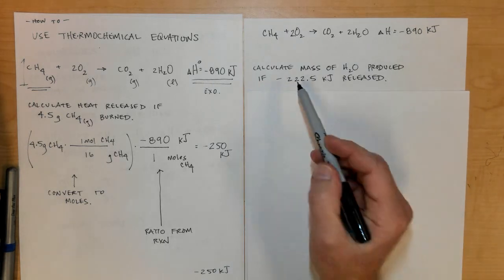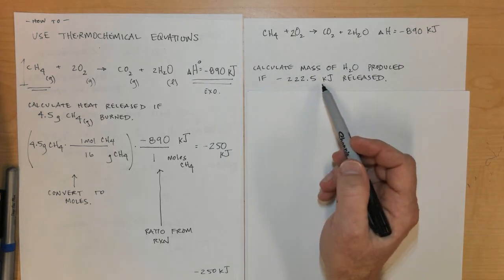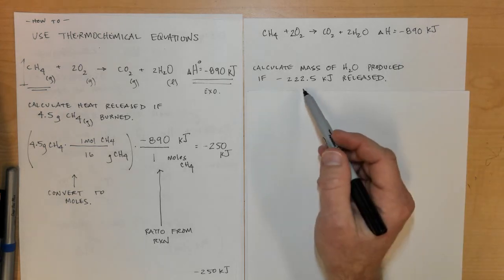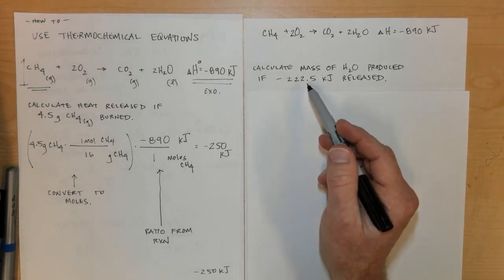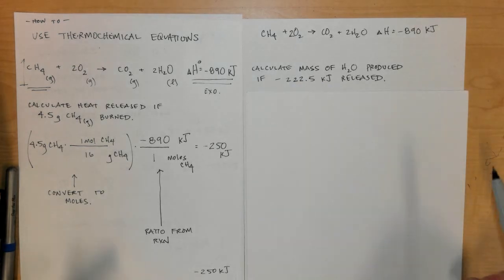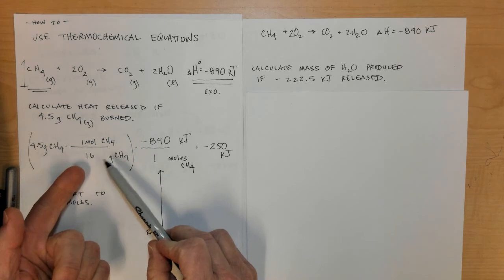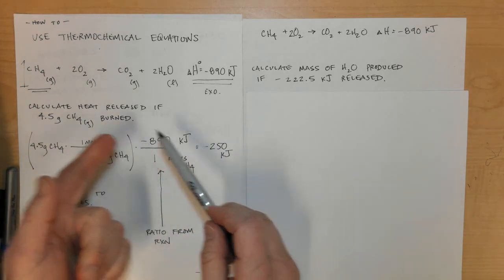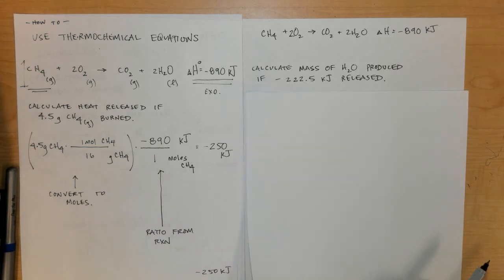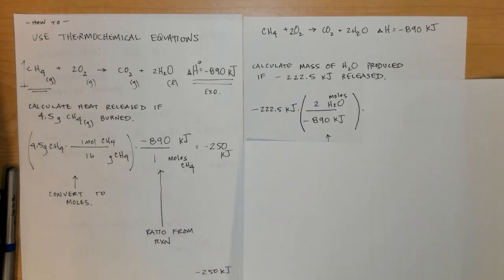Last time I started with a mass and converted to moles. This time I start with an energy and I'll need to work backwards to get to mass. My first step in this process is to write down my negative 222.5 kilojoules.